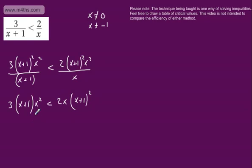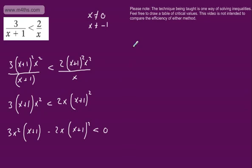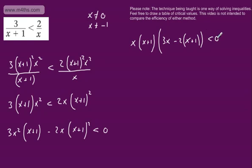I'm going to take this to the left-hand side. We're going to have 3x squared times x plus 1 minus 2x times x plus 1 squared, and that is strictly less than 0. Factoring this — the highest common factor is x and x plus 1 in both terms. That leaves 3x from the first term and minus 2 times x plus 1 from the second. So inside the brackets we get 3x minus 2x minus 2, giving x minus 2. We end up with x times x plus 1 times x minus 2 strictly less than 0.